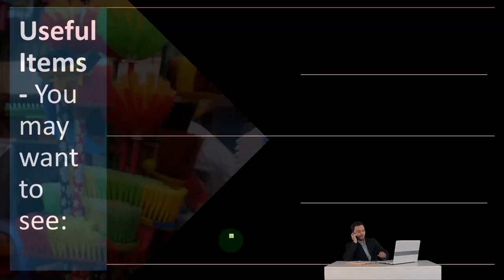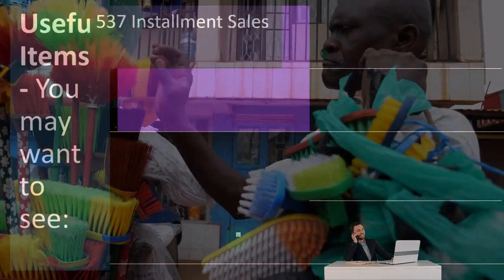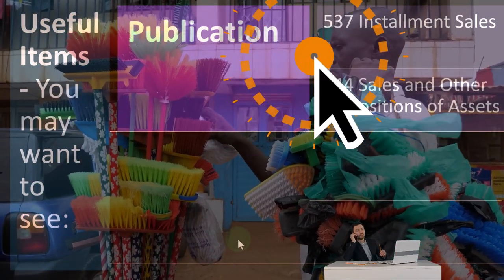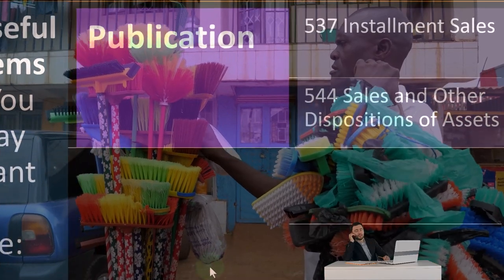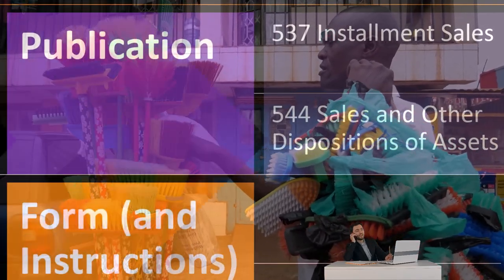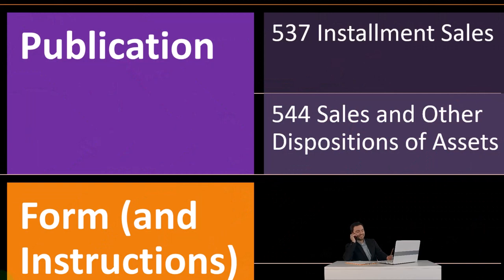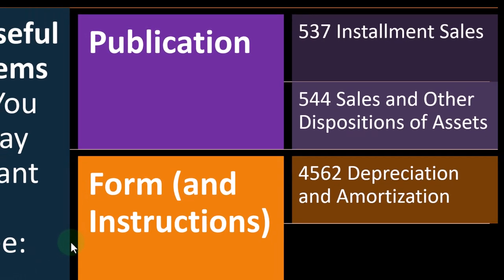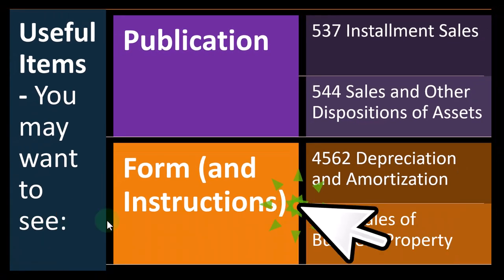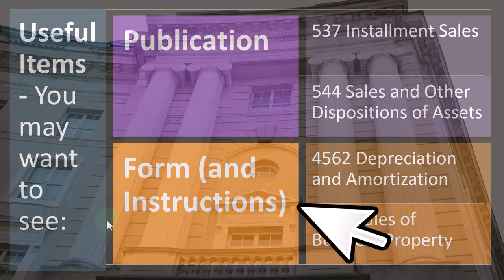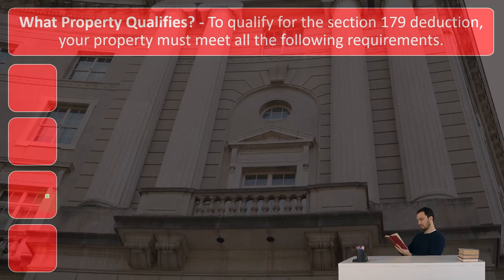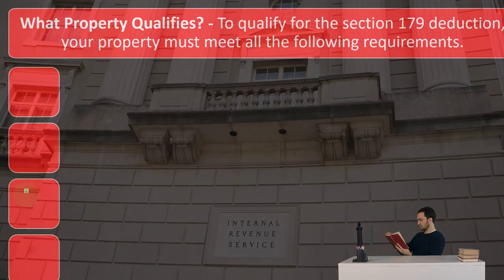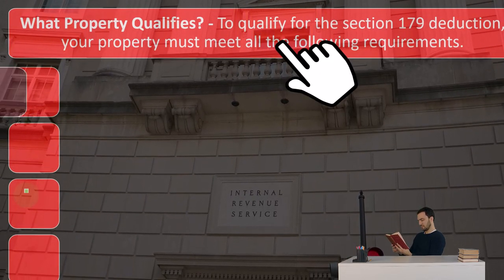Useful items — you may want to see publications. Publication 537: installment sales, if you have that particular situation. Publication 544: sales and other disposition of assets, when you're disposing of the assets. Form and instructions for Form 4562, depreciation and amortization — you can find these on the IRS website, irs.gov. And Form 4797: sales of business property. So what property qualifies? To qualify for the Section 179 deduction, your property must meet all of the following requirements.